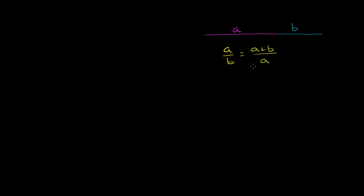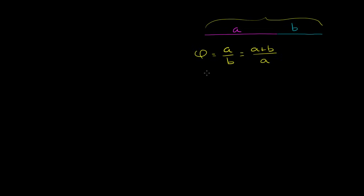I want to see if I can construct some a that's on this perfect ratio, so that the ratio of the longer side to the shorter side is equal to the ratio of the whole thing to the longer side. Now let's just assume that we can find a ratio like that and we'll call it phi — we'll use the Greek letter phi for that ratio.